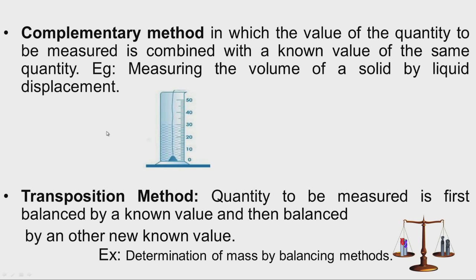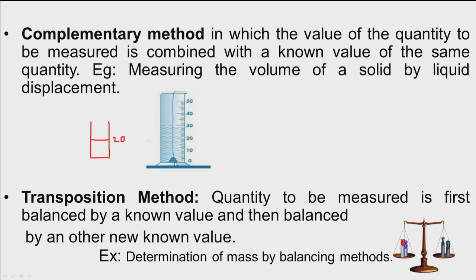To explain the complementary method: initially take a beaker and fill it with a liquid — say water — to a level of 20 cubic centimeters. Then insert the solid whose volume is to be measured into the beaker. The liquid displaces from 20 to 30 cubic centimeters; this displacement of 10 cubic centimeters gives the volume of the solid immersed in the liquid.